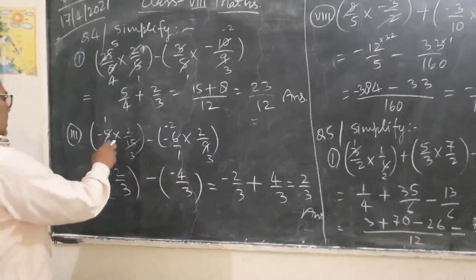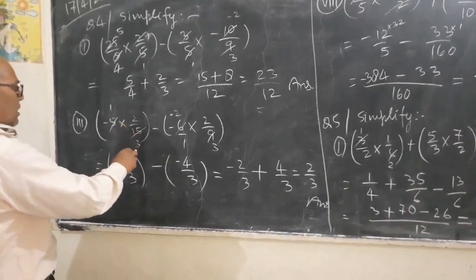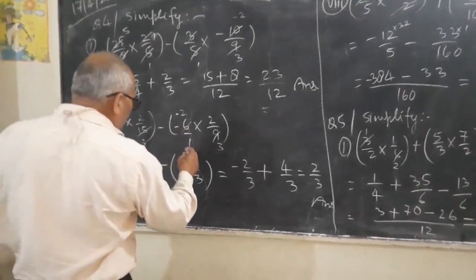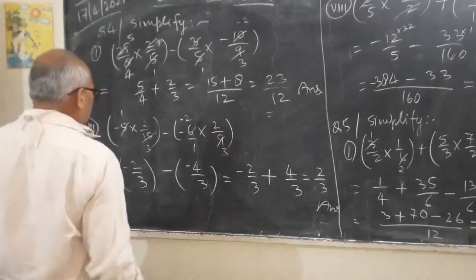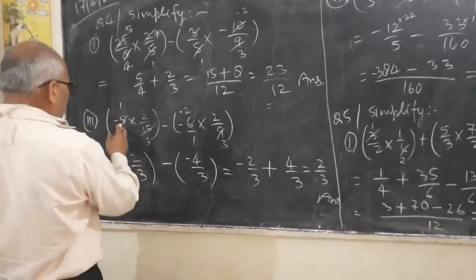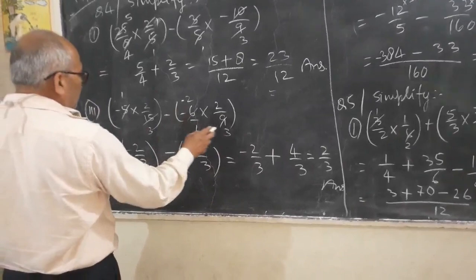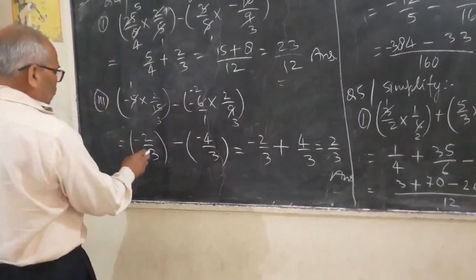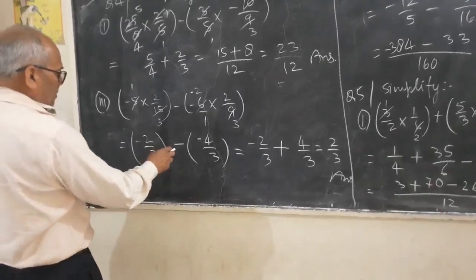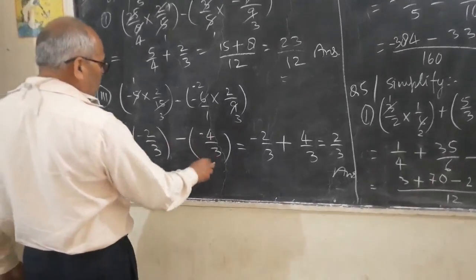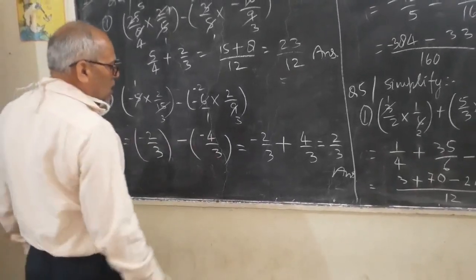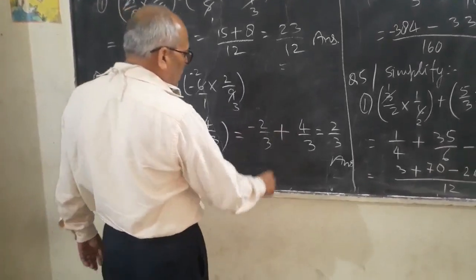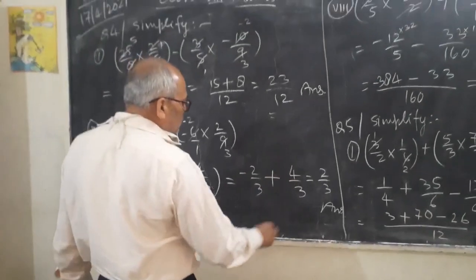Third part: minus 5 into 2 upon 15 in one bracket, minus minus 6 upon 1 into 2 upon 9. Simplifying: 15 and 3 give 5, and 9 gives 3. It is minus 2 upon 3 in bracket minus 4 upon 3, that is 2 upon 3 plus 4 upon 3.